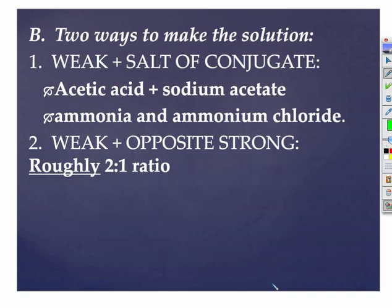Let's take a look at physically how we make a buffer. There's a couple of ways that we can get our goal. Our goal is to have both the weak and its conjugate present. We have to have both because we have to have the ability to shift in both directions. So we have to have an equilibrium set up where we have some product and some reactant present already. So you can think of it very much like a common ion situation.